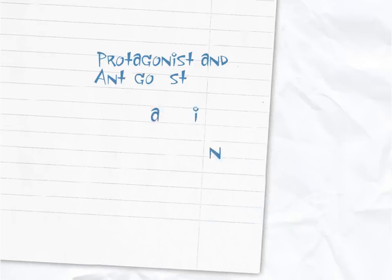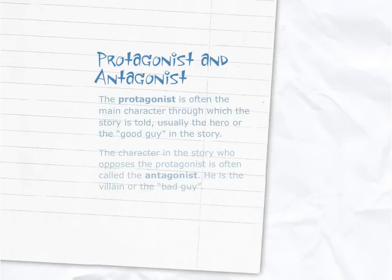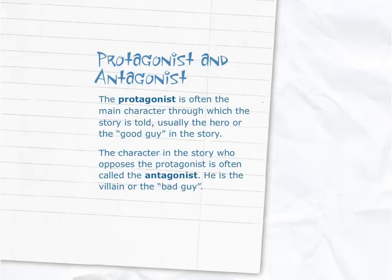Protagonist and antagonist. The protagonist is often the main character through which the story is told, usually the hero or the good guy in the story. The character in the story who opposes the protagonist is often called the antagonist. He is the villain or the bad guy.